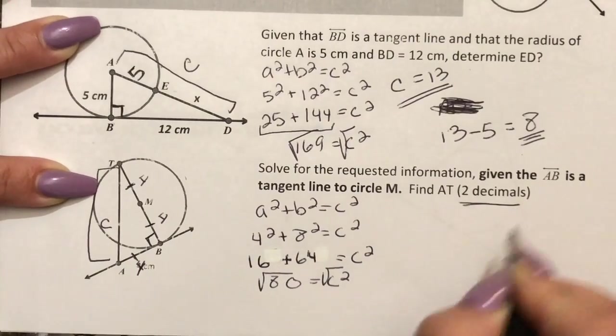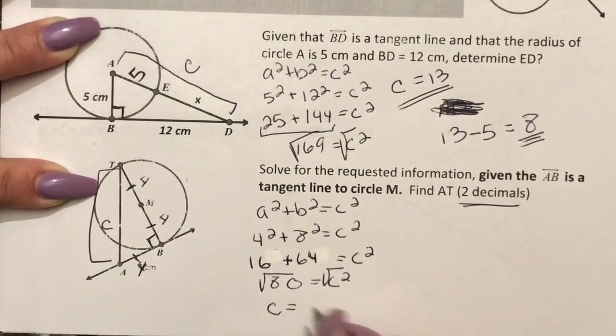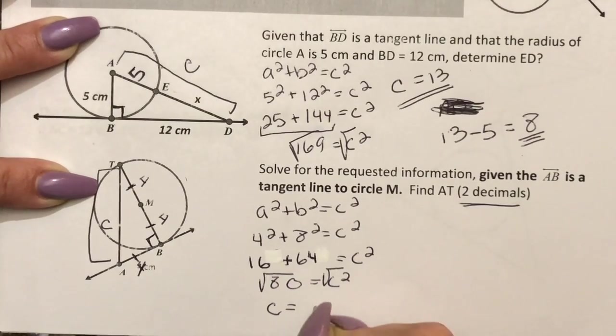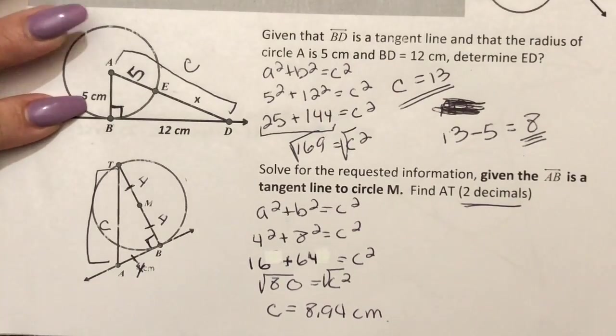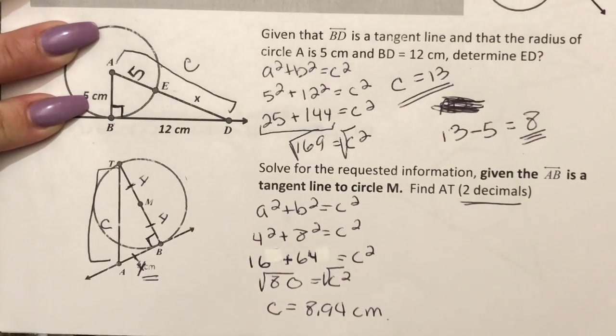Now the instructions do say 2 decimals, so when I put this in the calculator I'm going to get 8.94 and I do know that it's centimeters based on what was given here.